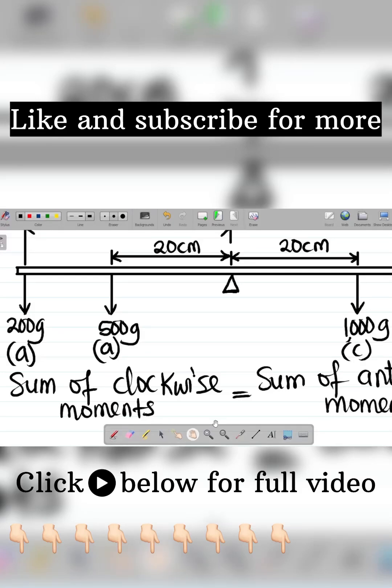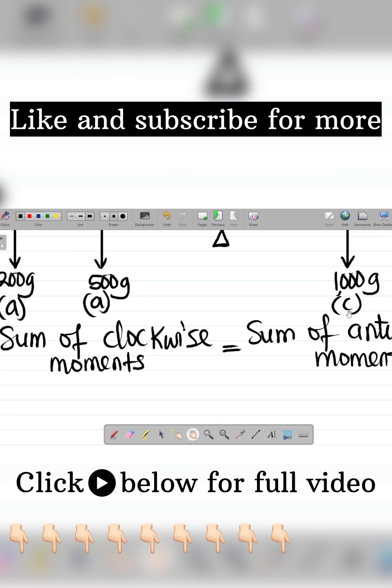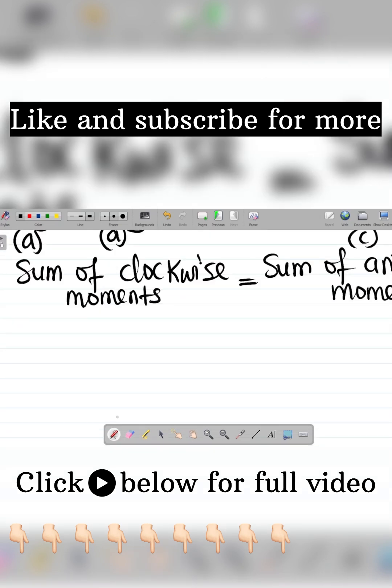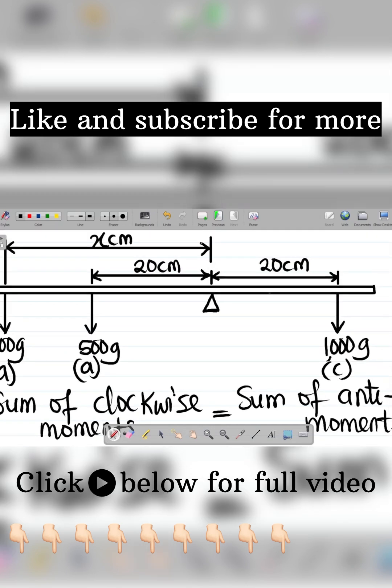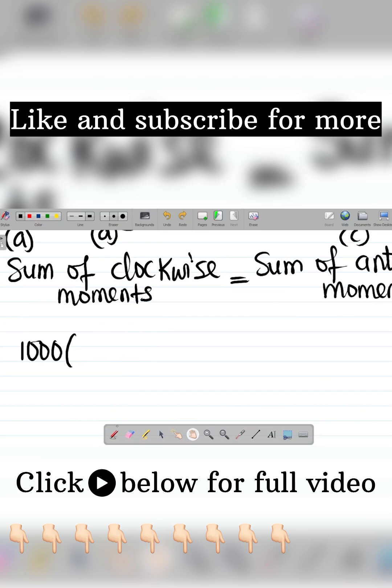What's the direction according to the hands of the clock? So for clockwise movement, I have 1000 grams multiplied by the distance. We can see that the distance here is 20 cm, so it becomes 1000 times 20 cm.